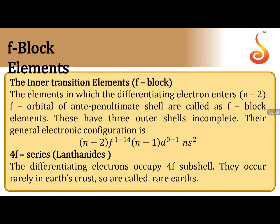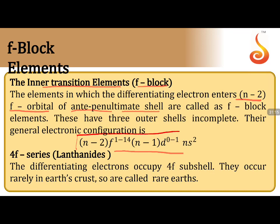F-block elements are called inner transition elements. They are 'inner' because they are positioned between two transition series. The differentiating electron enters into the (n-2)f orbital (anti-penultimate shell). They show properties similar to transition elements with incompletely filled f-subshells. General electronic configuration: (n-2)f¹⁻¹⁴ (n-1)d⁰⁻¹ ns².